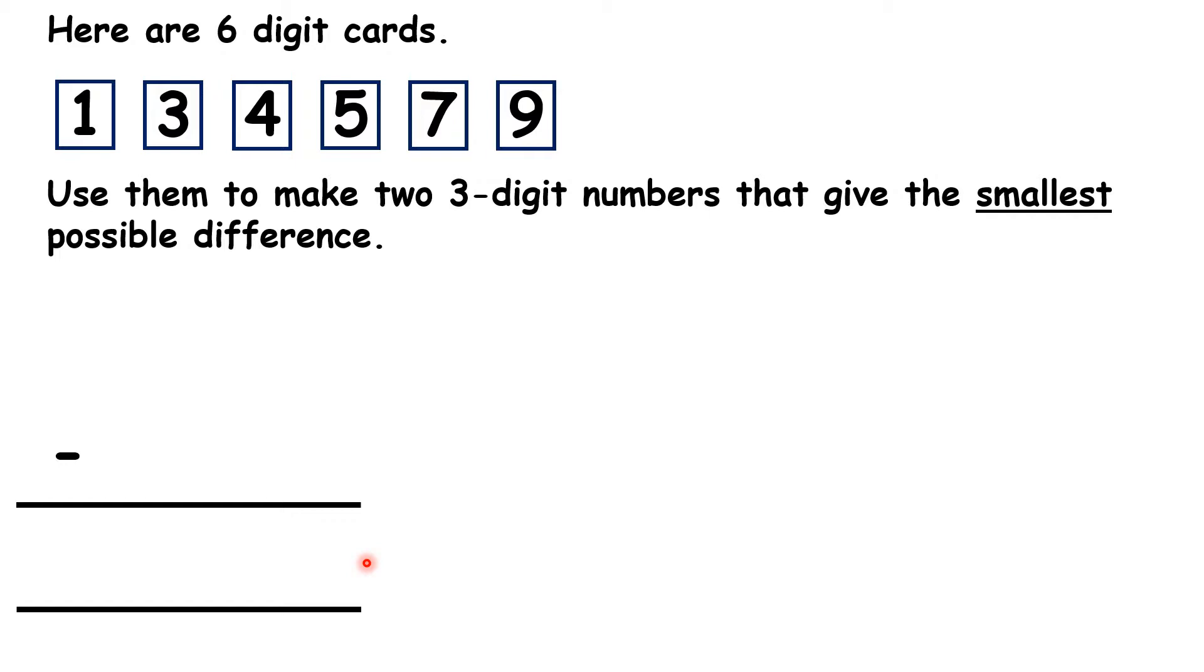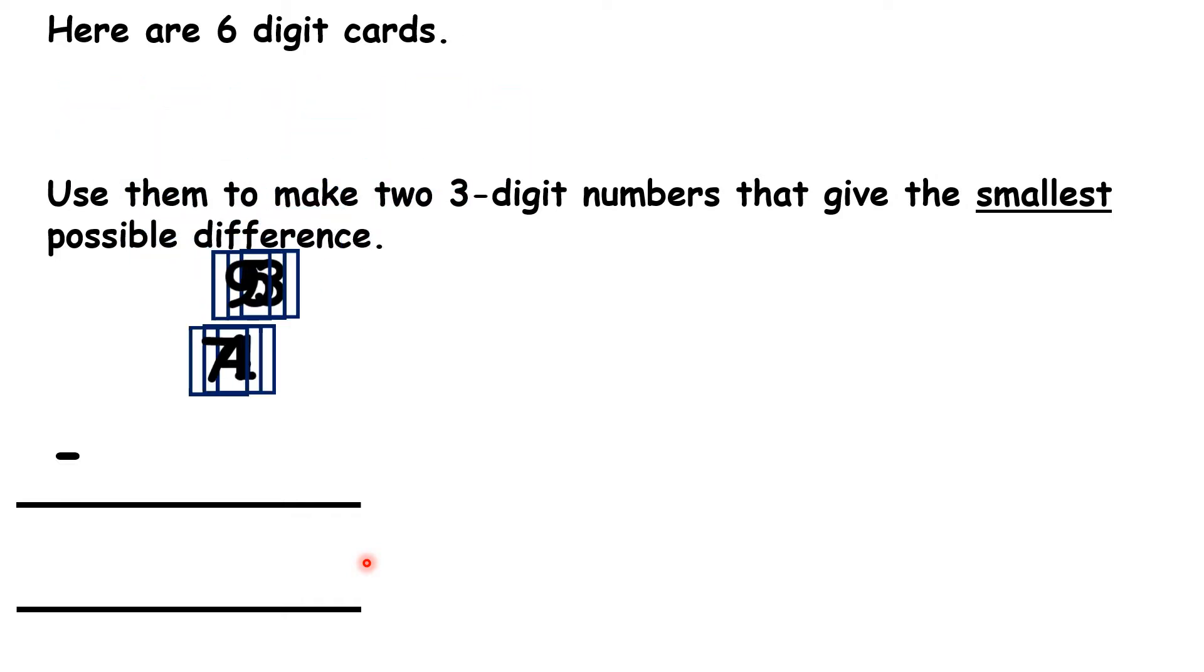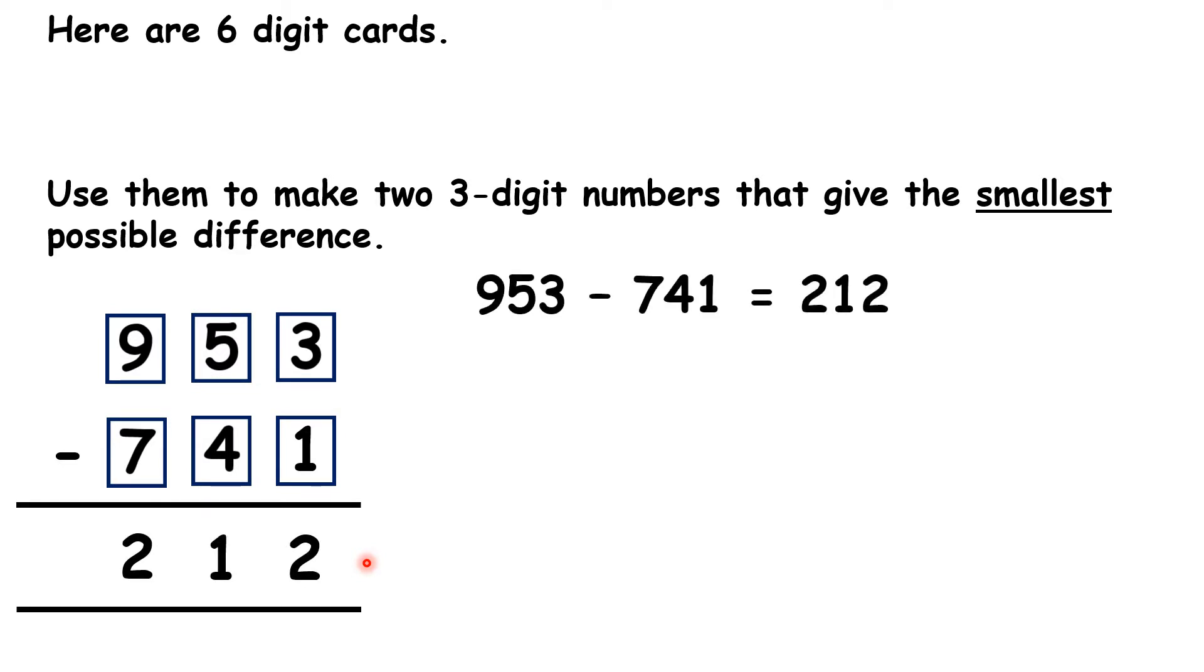Well, using digit cards to solve subtraction problems is much harder than using them to solve addition problems. So to start with, let's use some trial and error here. So we might start by placing the cards like this, setting them out in the same way as we did in our last lesson when we were finding the largest possible total. So if we have 953 and 741, our difference is 212.